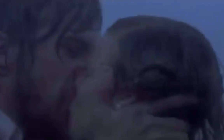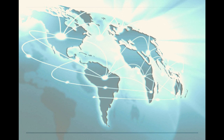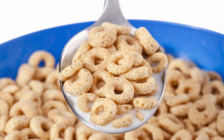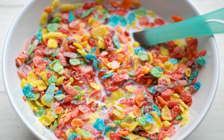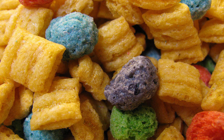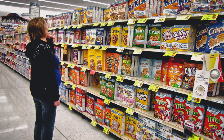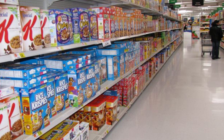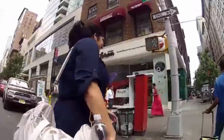Another benefit of international trade is greater utility around the world. Utility has a better chance of being maximized when there's a greater variety of goods and services to choose from. Think about the cereal aisle — do you want just cornflakes or Cheerios? You want Fruity Pebbles, Corn Pops, Captain Crunch Crunch Berries. When consumers have greater choice, they have a greater chance of seeing their utility maximized, and greater choice and better variety is achieved through allocative efficiency.